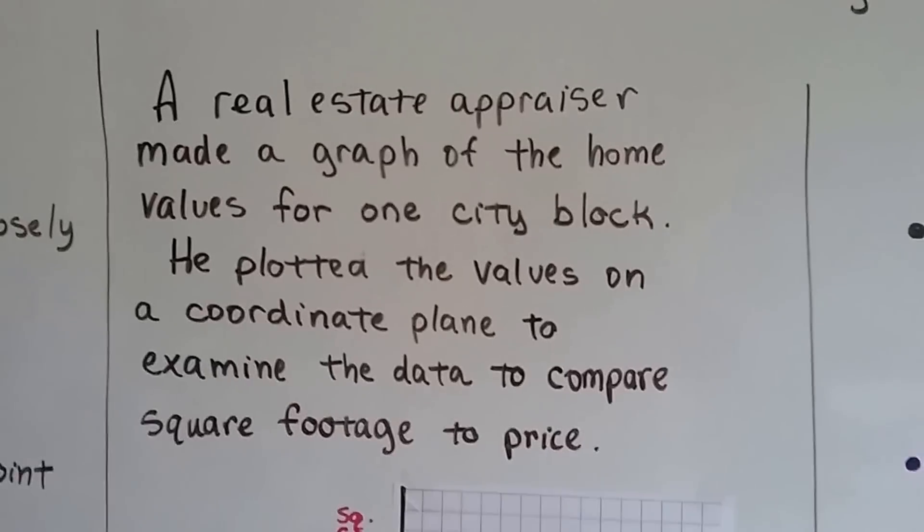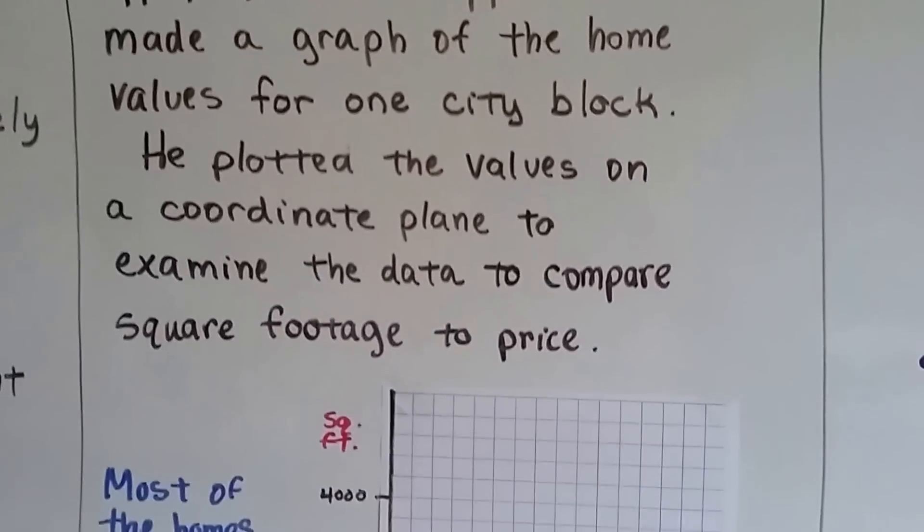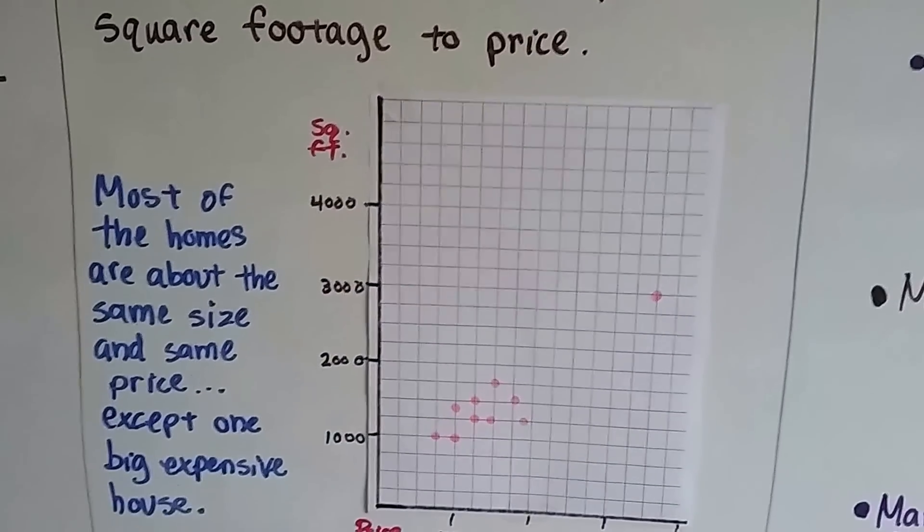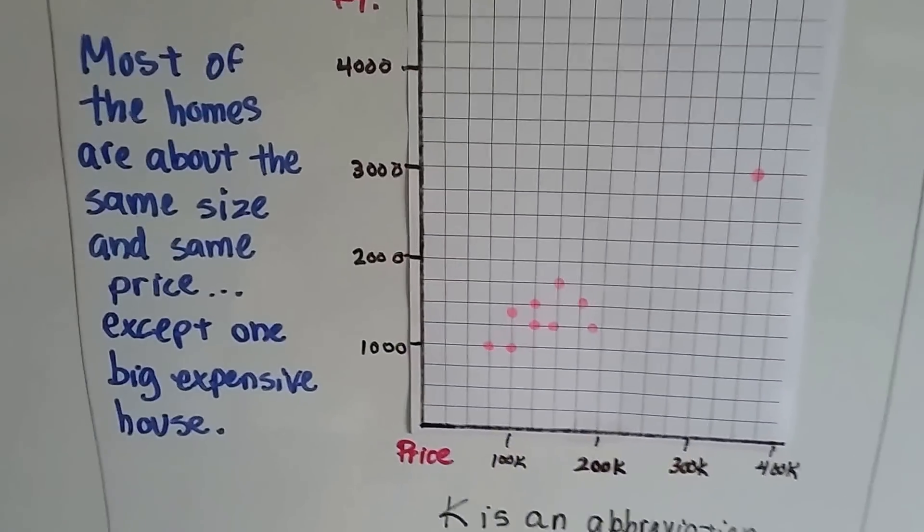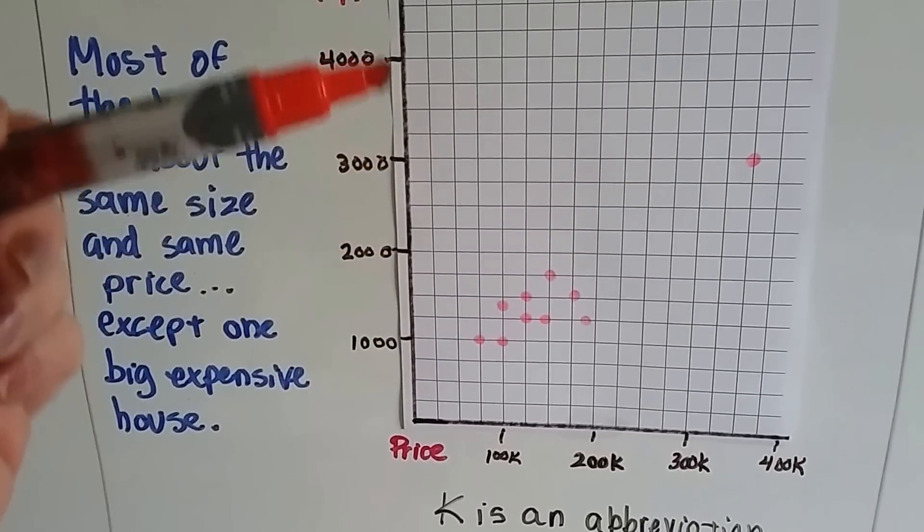A real estate appraiser made a graph of the home values for one city block. He plotted the values on a coordinate plane to examine the data, to compare square footage to price for the houses. And this is what he came up with. So here's 1,000 square feet, 2,000, 3,000, 4,000.